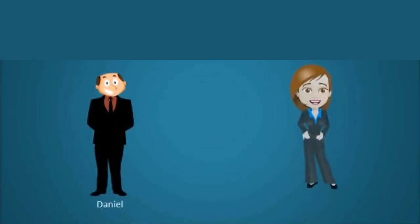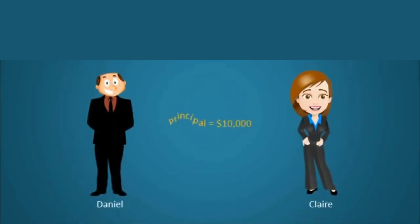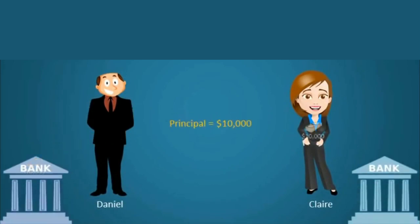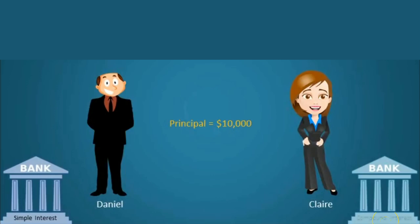Daniel and Claire each deposit $10,000 in high interest savings accounts. However, the bank that Daniel has deposited his money at offers only simple interest, while the bank that Claire has deposited her money at offers compound interest.